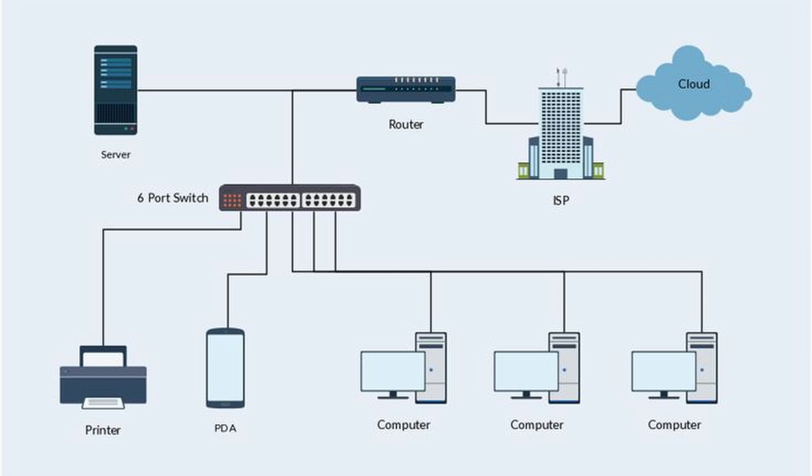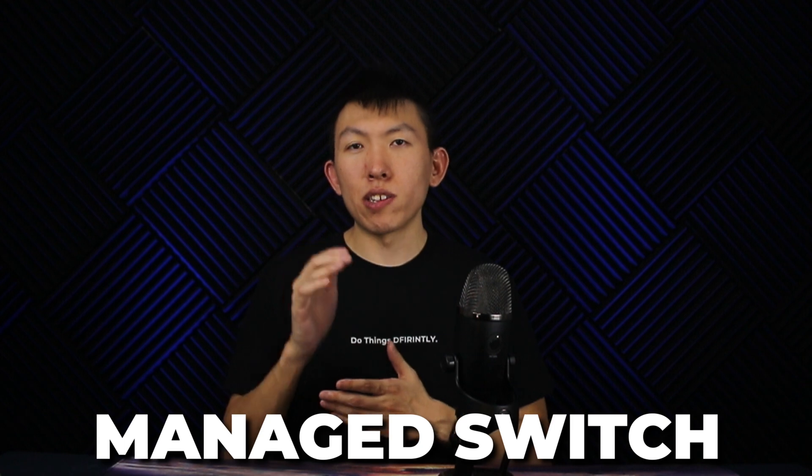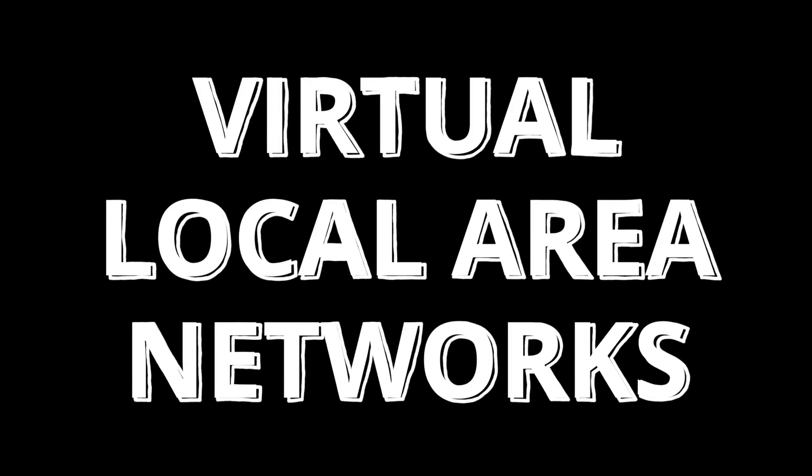Project number five: new network, who dis? For this project, your main objective is to begin drawing up a diagram of your current home network, and then think about purchasing a cheap managed switch so you can start implementing what are called VLANs — virtual local area networks. I'll link a switch that I like to use down below.